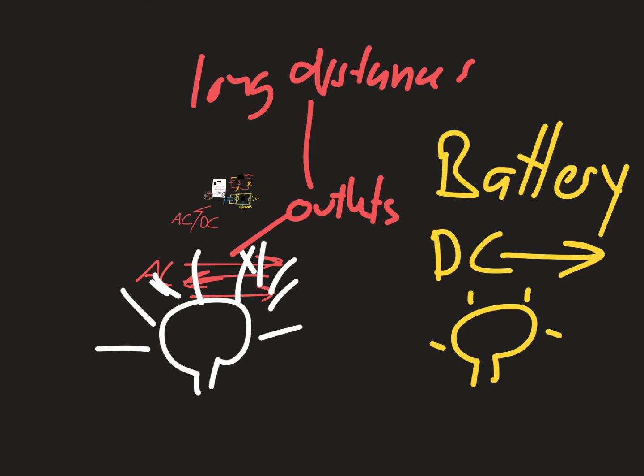Alternating current also flows over long distances. With direct current, you'd need a generator every couple hundred yards — imagine living next to a generating plant every so often. Alternating current allows more power to travel over a longer distance, which is why it powers our homes.